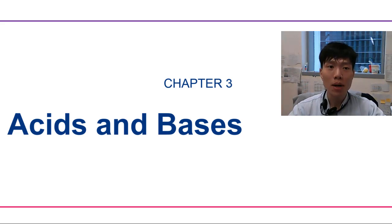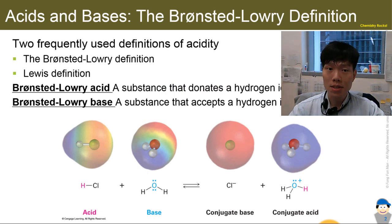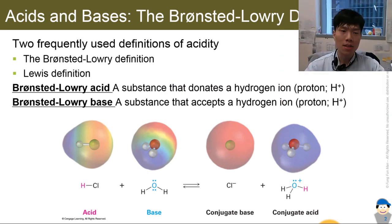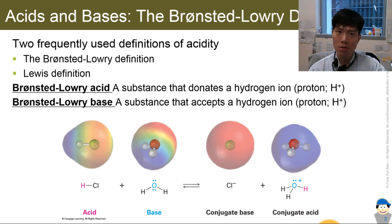Let's start by talking about the definition under the Bronsted-Lowry theory. In this topic, we will discuss two different kinds of acids and bases: the Bronsted-Lowry and Lewis. For Bronsted-Lowry acid, it all regards the H+, the proton. So for an acid, it must be the proton donor. For the base, it must be a proton acceptor.